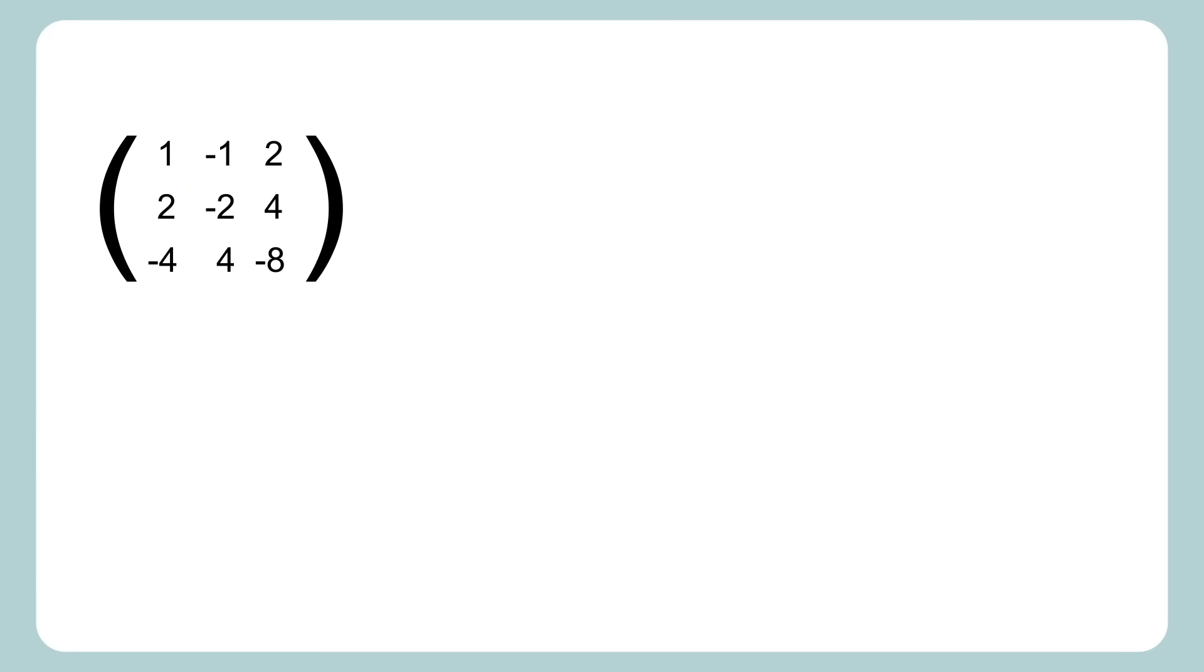But what's nice about rank one matrices is they can be written in this form, where you take the first row, put it here, and these are just those constants we are multiplying by. Using matrix multiplication as normal, this multiplies to our three by three rank one matrix.